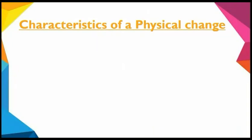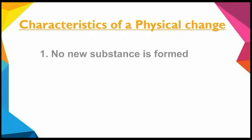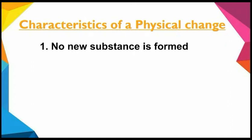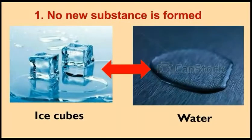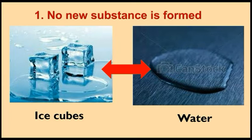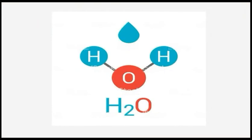Characteristics of a Physical Change. First: No New Substance is Formed. You might have observed that when a cube of ice is taken out of a refrigerator, it melts into water. If this water is kept back in the refrigerator, it refreezes into ice. This indicates that the properties of water and ice are the same — their chemical composition is the same. They both have the formula H₂O. On melting of ice or freezing of water, no new substance is formed. Only the physical state of the substance changes.